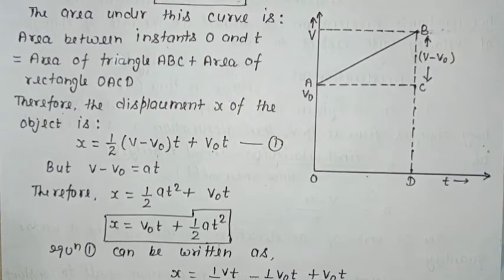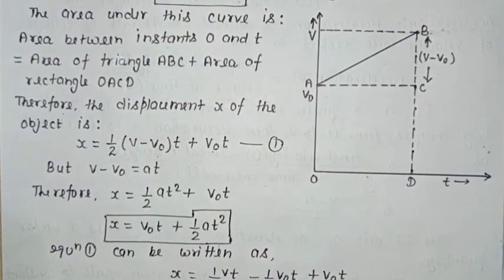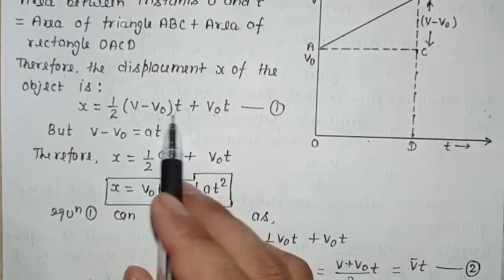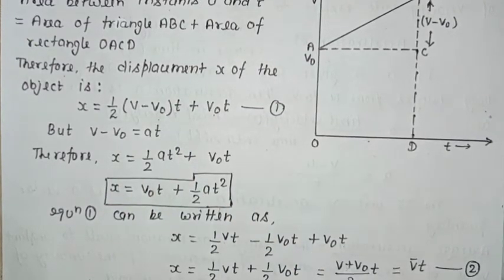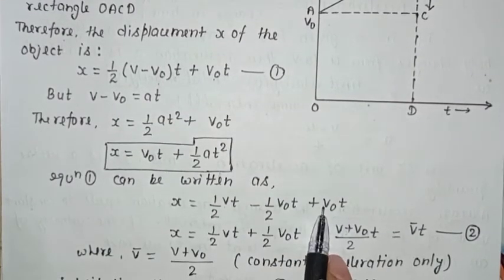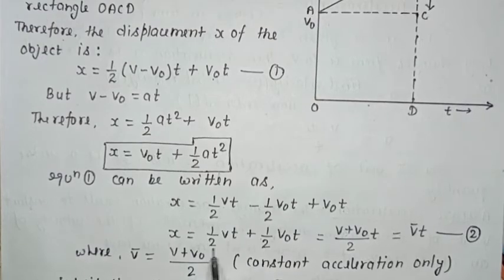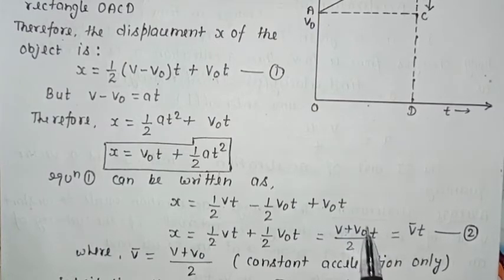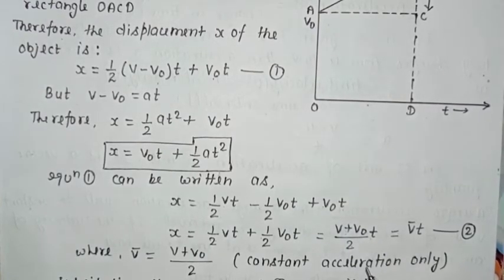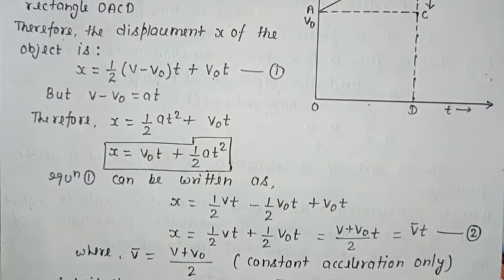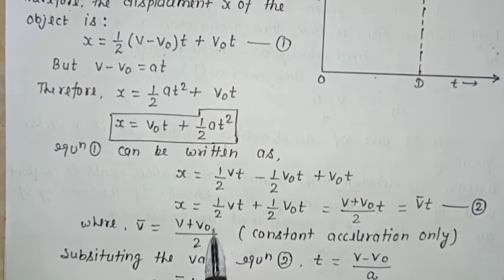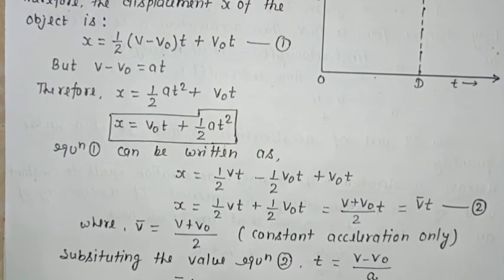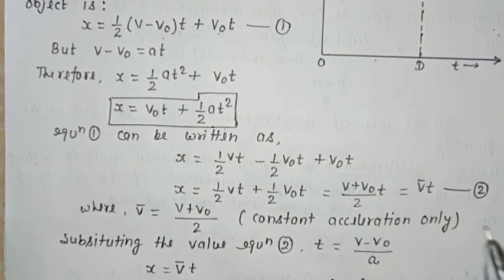Now from equation 1, opening the bracket: ½Vt − ½V₀t + V₀t gives x = ½(V + V₀)t. Here (V + V₀)/2 is the average velocity V̄, so x = V̄·t. Also, V̄ = (V + V₀)/2 — this holds only for constant acceleration, i.e., when acceleration is constant.